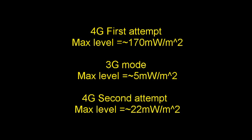As you probably noticed, in the first attempt of 4G data, the max levels were around 170 mW per square meter. When the 3G data mode was on, the max levels were around 5 mW per square meter. In the second 4G attempt, the max levels were around 22 mW per square meter.